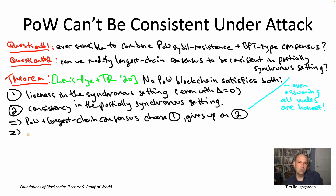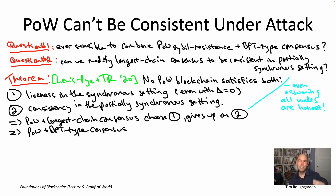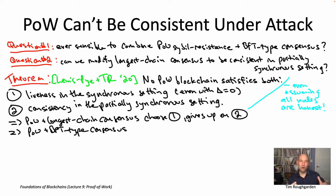Suppose we tried to couple proof-of-work civil resistance with BFT-type consensus. Intuitively, for longest chain consensus we needed to choose one leader per round and used a proof-of-work lottery to do that. For BFT-type consensus, we might want to choose a committee — one leader to propose the block and maybe 100 nodes to contribute voting — using those same hard puzzles to select on average 100 nodes per round. The 100 nodes that happen to solve a hard puzzle in a given period would then be tasked with carrying out something like the Tendermint protocol.